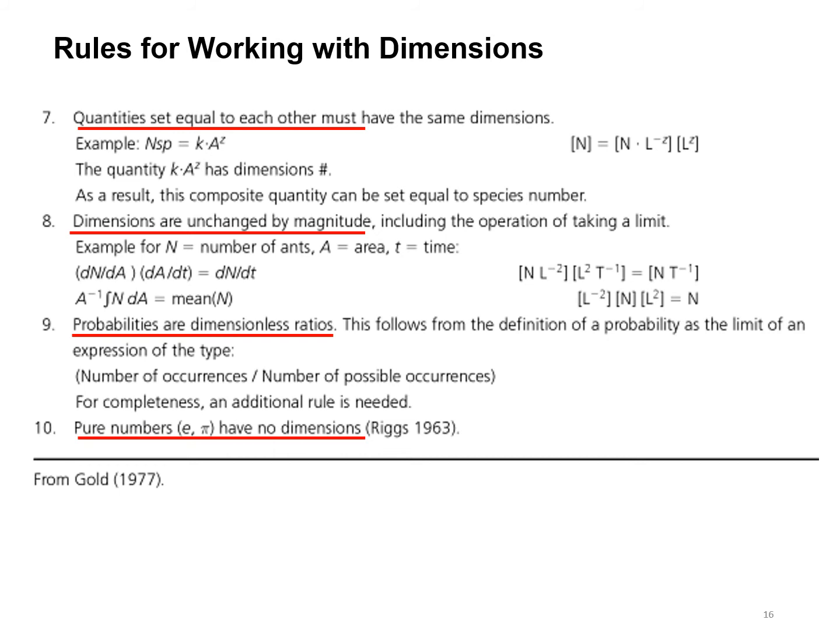Dimensions are unchanged by magnitude. Probabilities are dimensionless ratios. And pure numbers like E or pi have no dimensions.